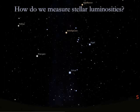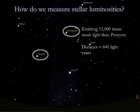If you go outside on any clear night, you'll immediately see that some stars are brighter than other stars. The differences in brightness do not by themselves tell us anything about how much light these stars are generating, because the brightness of a star depends on its distance as well as on how much light it actually emits. For example, the stars Procyon and Betelgeuse appear about equally bright in our sky, but Betelgeuse emits about 15,000 times as much light as Procyon. Procyon appears as bright because it's over 50 times closer.